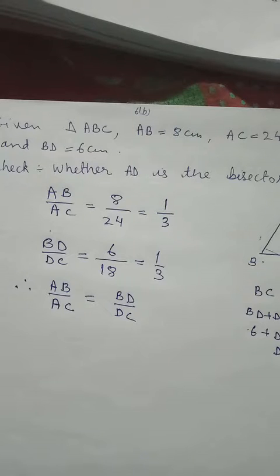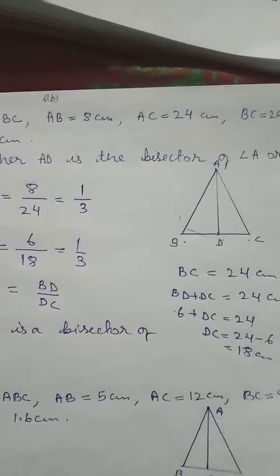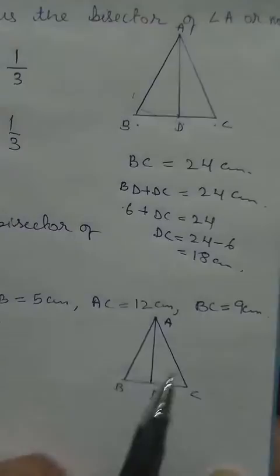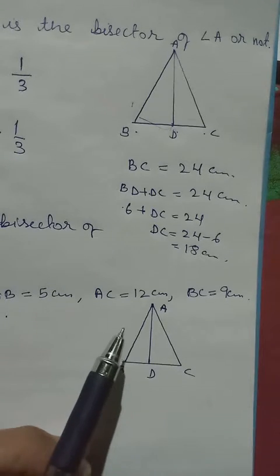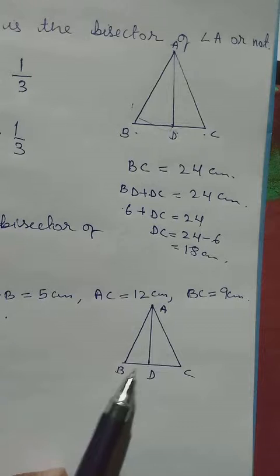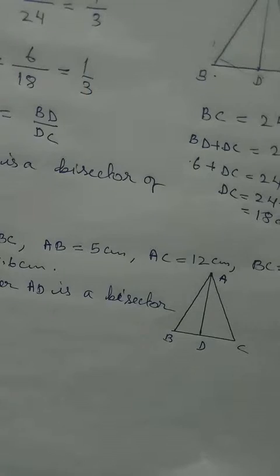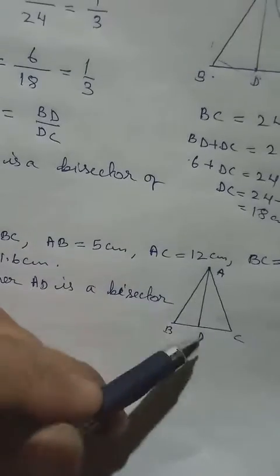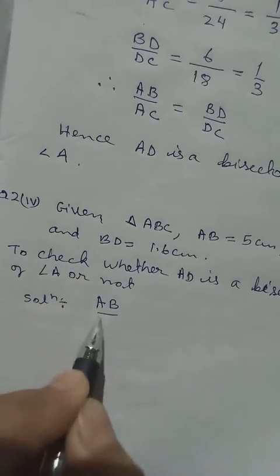Number three also goes the same way. We have to show whether AD is a bisector or not. So what to do? We have to check the ratio as well, the ratio of the containing side and the ratio of the opposite side. Since we suspect AD to be a bisector, let us take the ratio of the containing side, that is AB by AC.